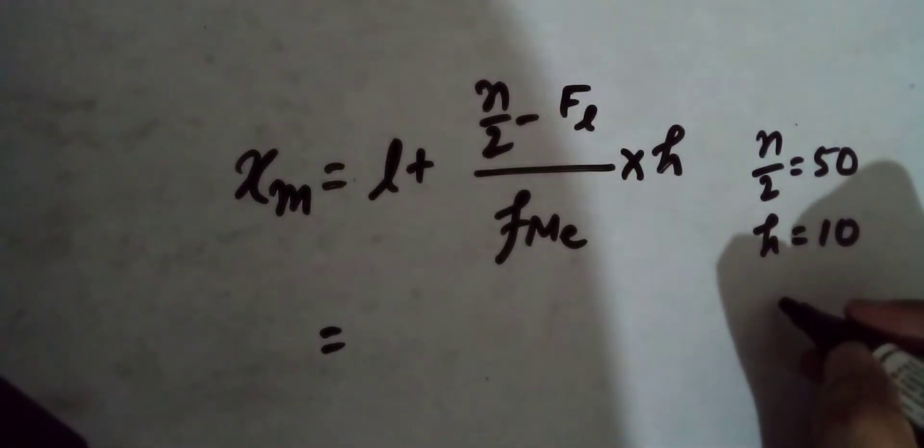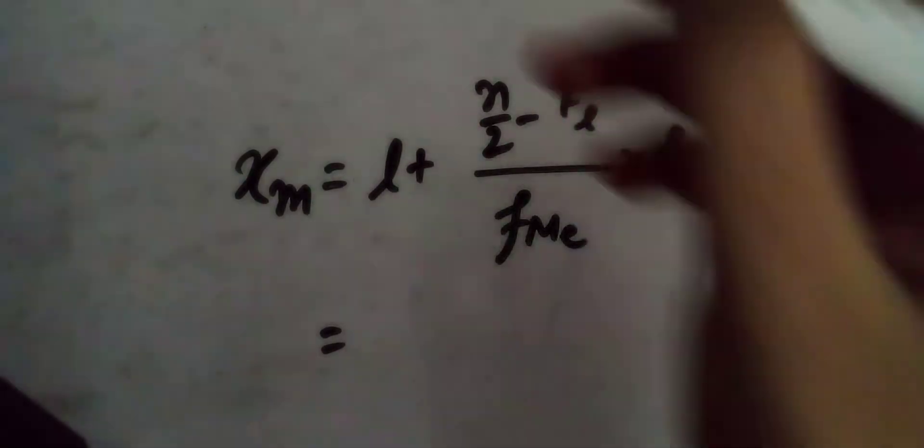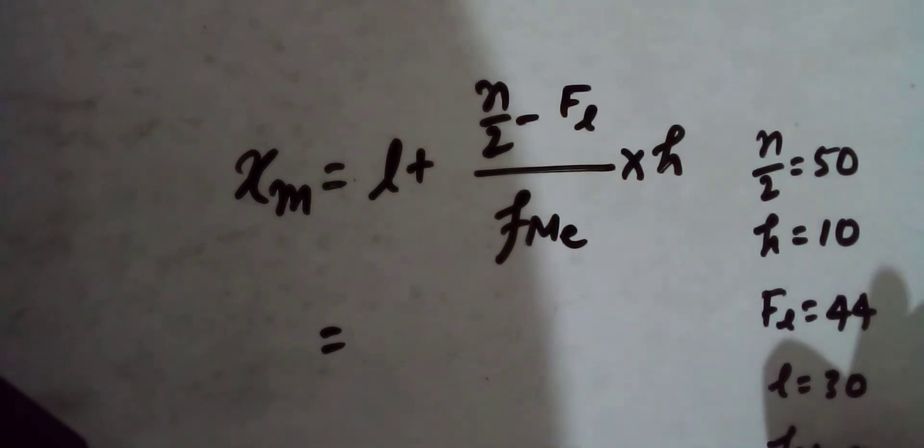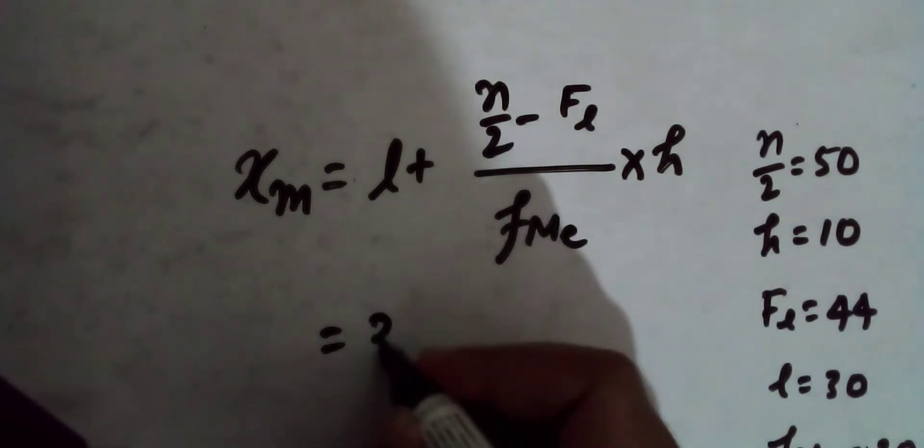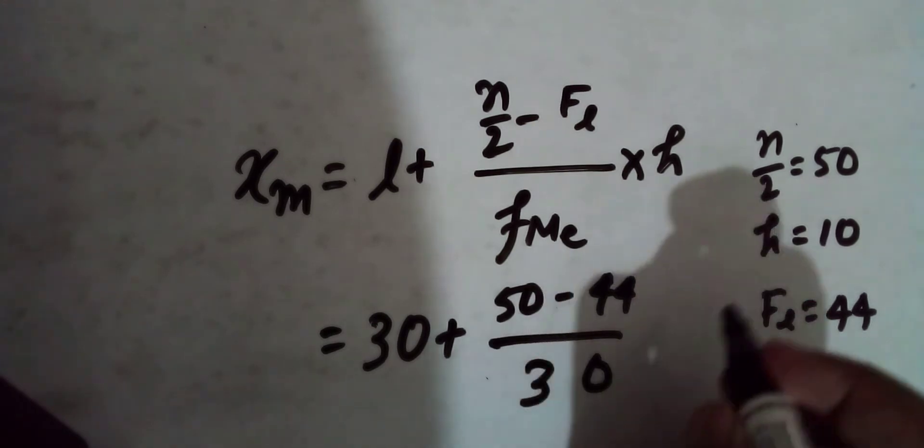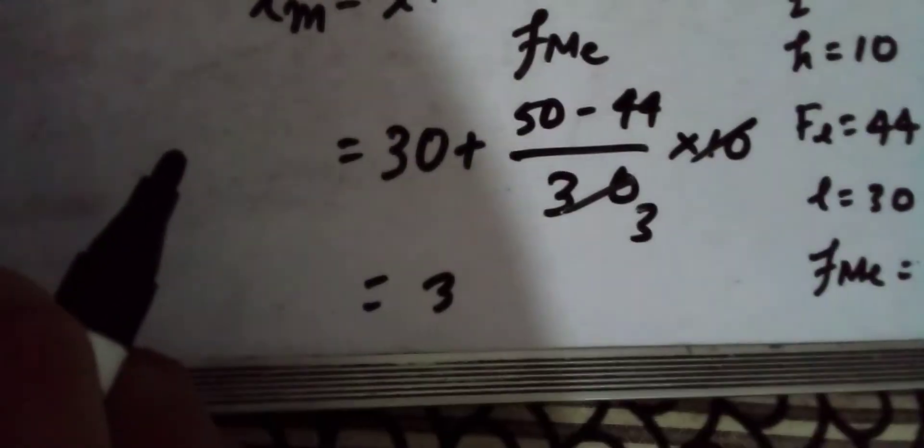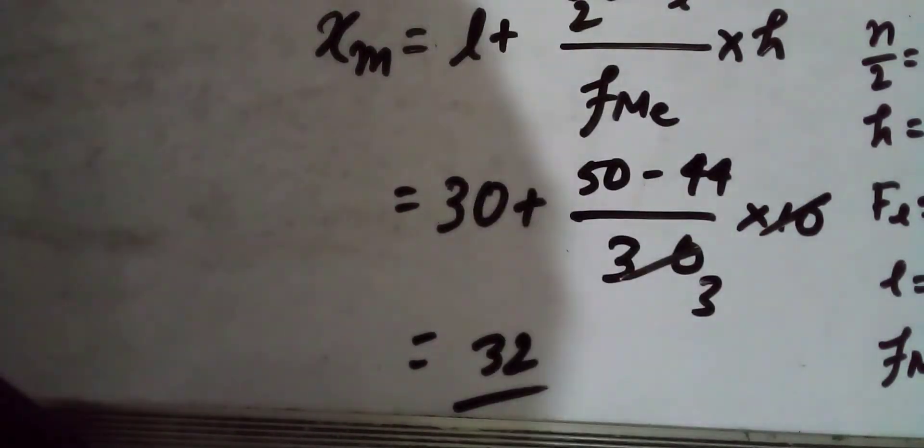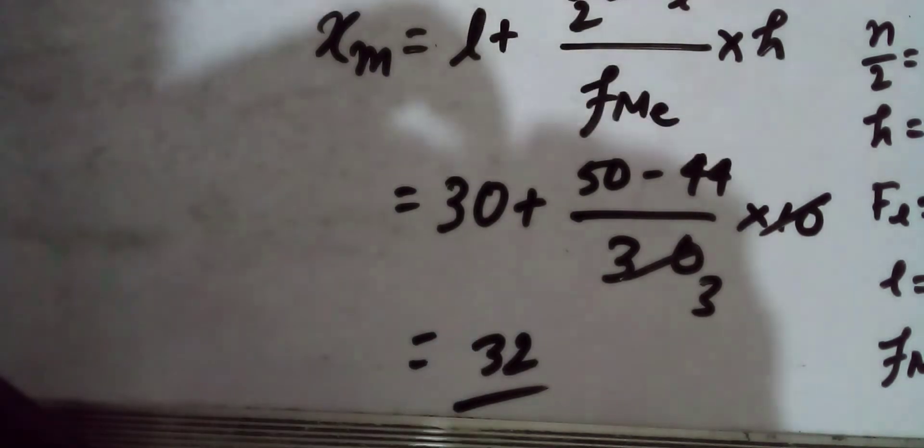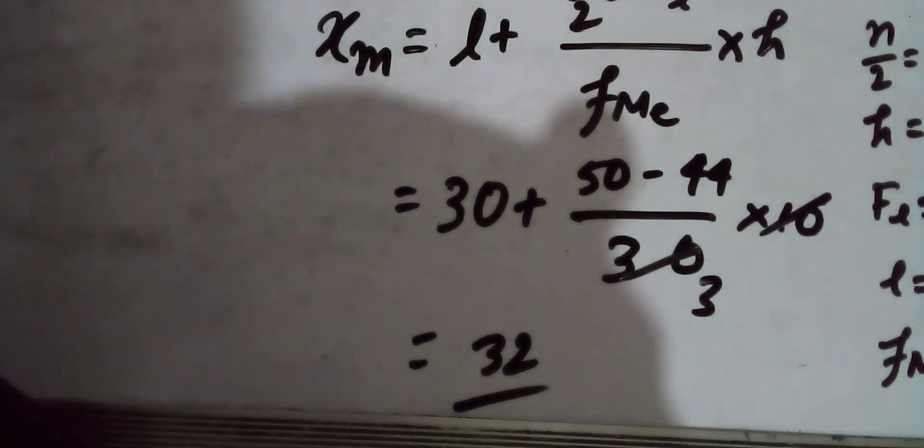The cumulative frequency preceding the median class is 44. The median class is 30 to 40, so the lower limit l is 30, and f_me is 30. Putting these values into the formula: 30 + ((50 - 44) / 30) × 10, which equals 32. This verifies our graphical result.